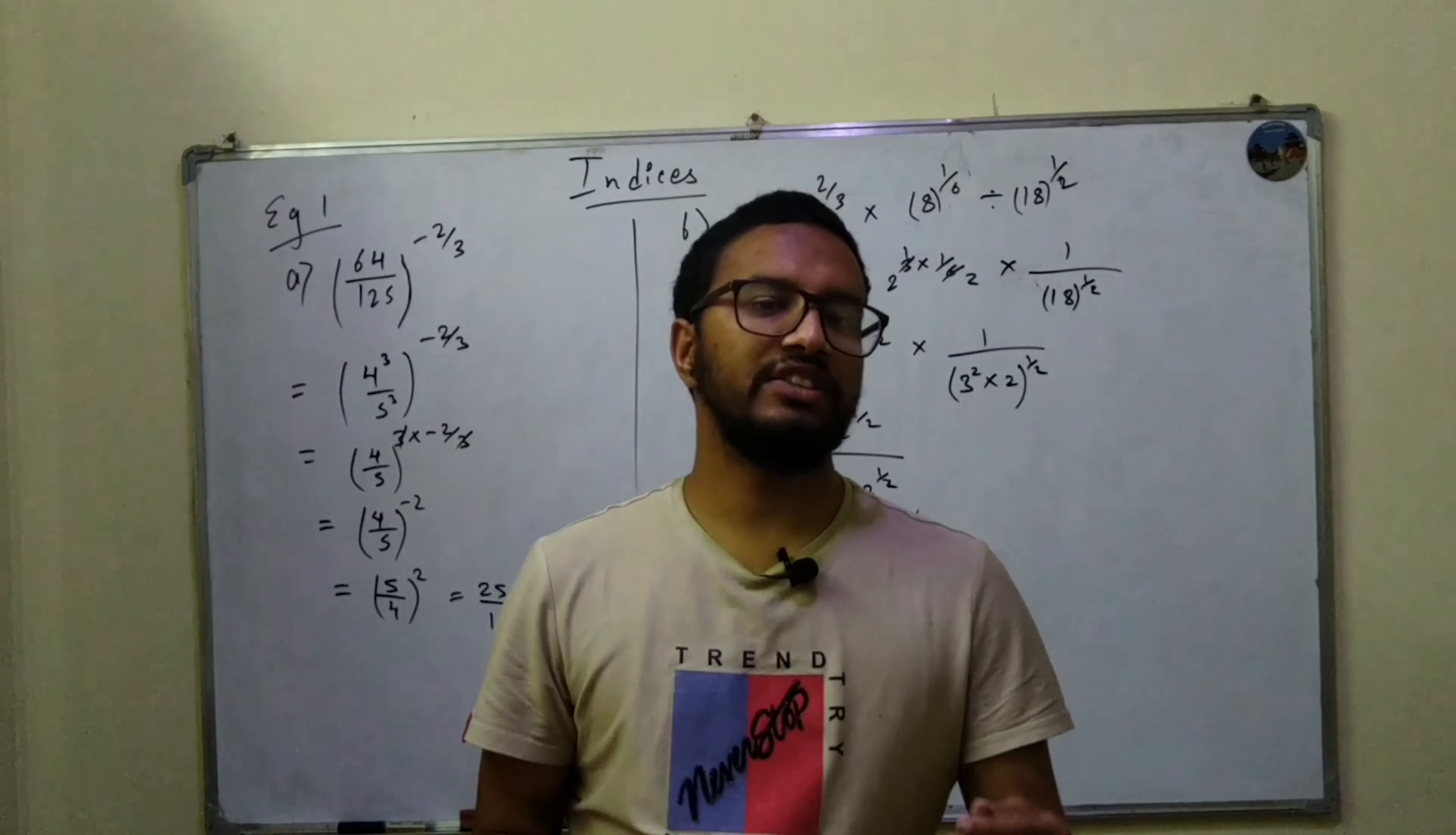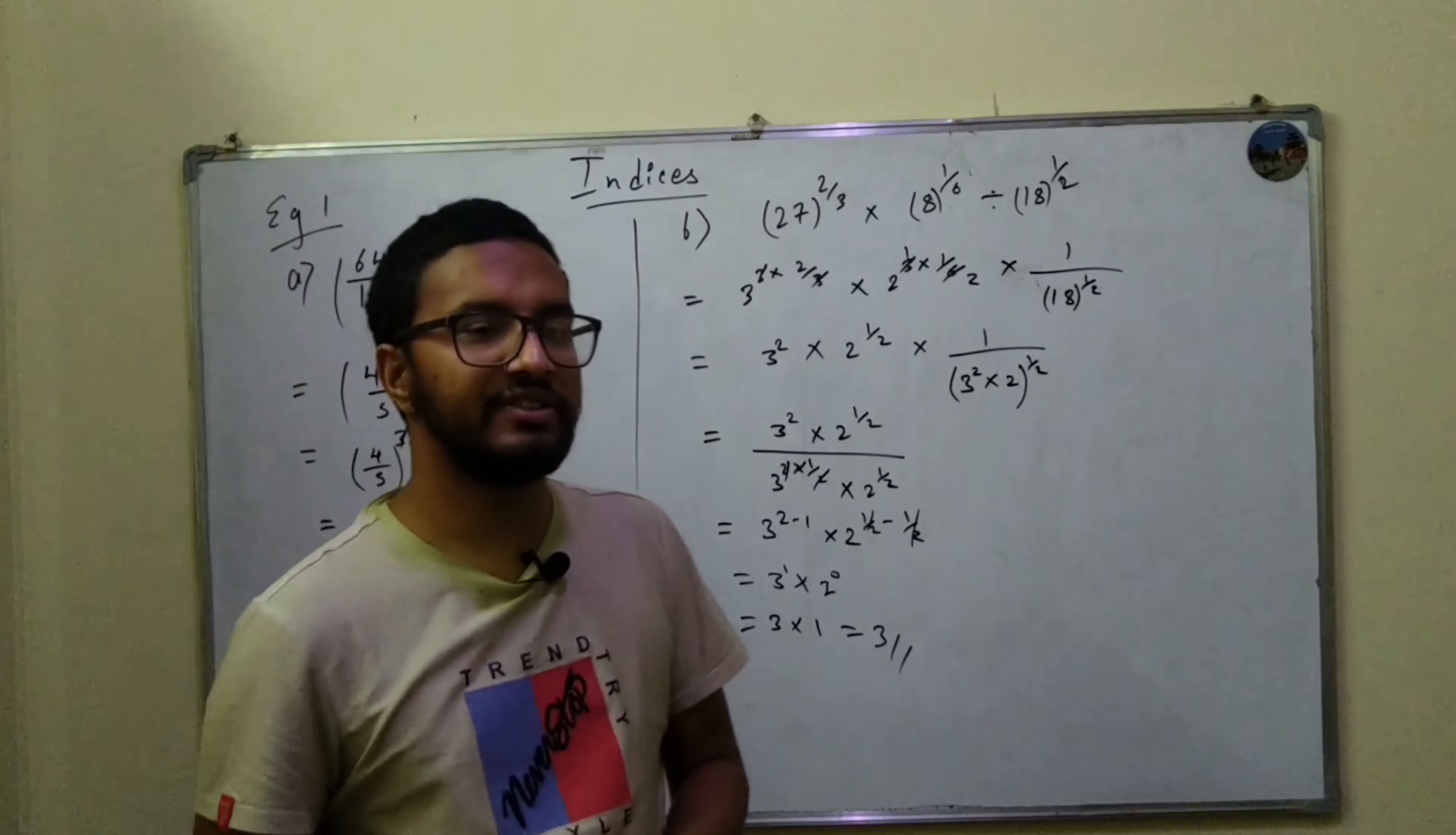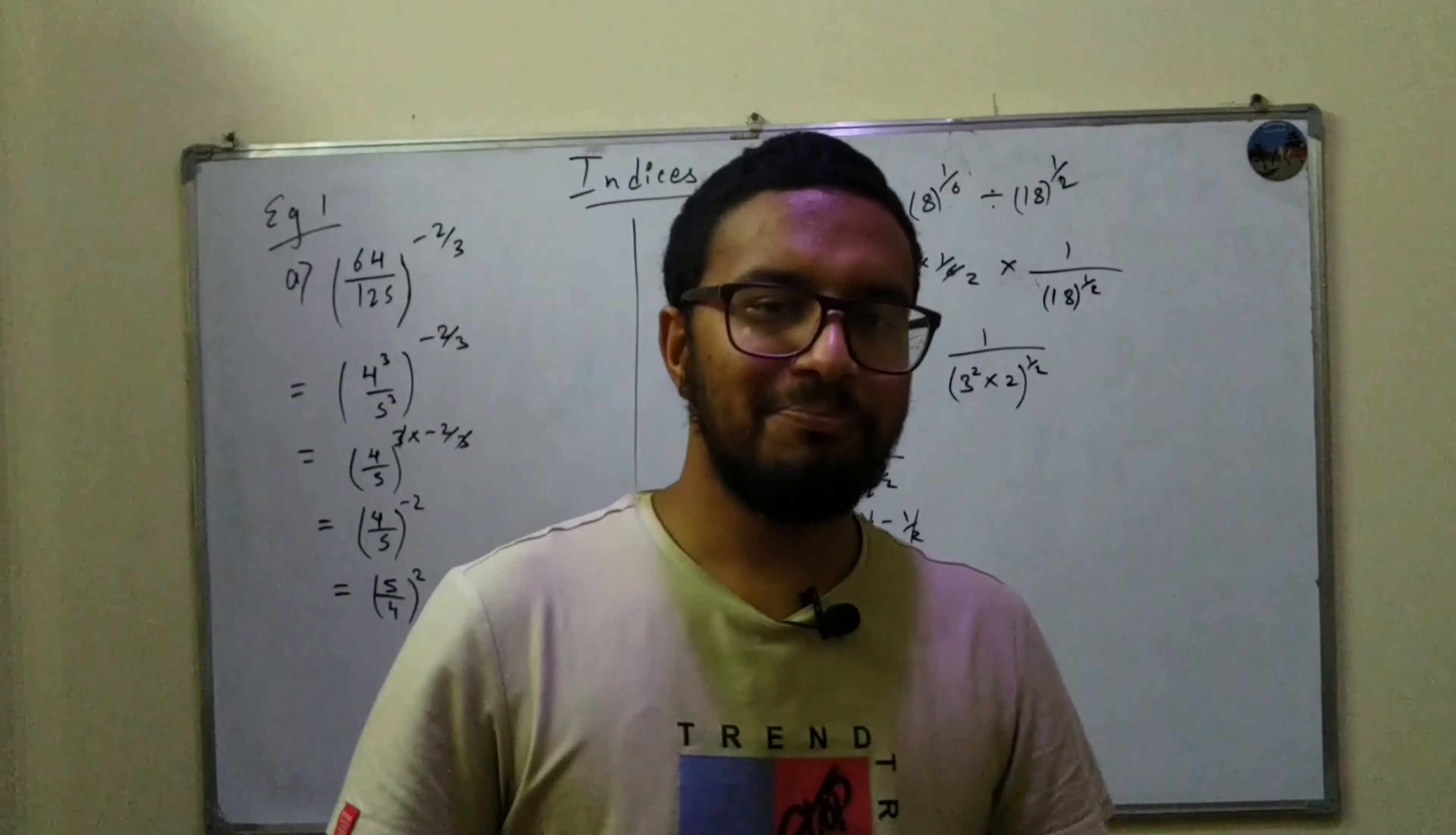2^0 equals 1 - we talked about that earlier. This is how we solve basic problems with exponents. In the exam you'll be asked tougher ones. We'll be looking at that aspect, but if you have any confusions until now please do comment down below.